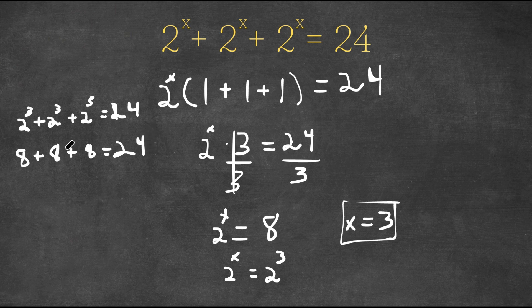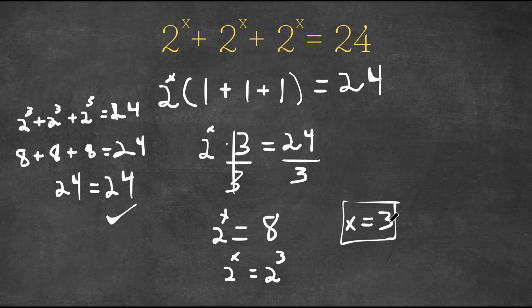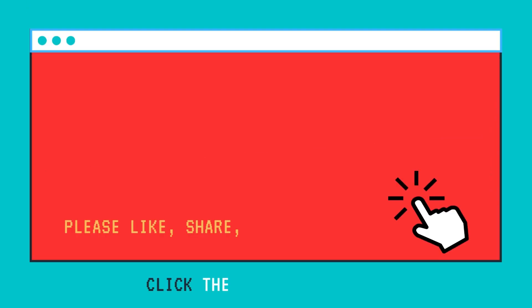Now 8 plus 8 is 16, and 16 plus 8 is 24. So we are left with 24 is equal to 24. And this is right, so we know our solution is right. So this is our solution.